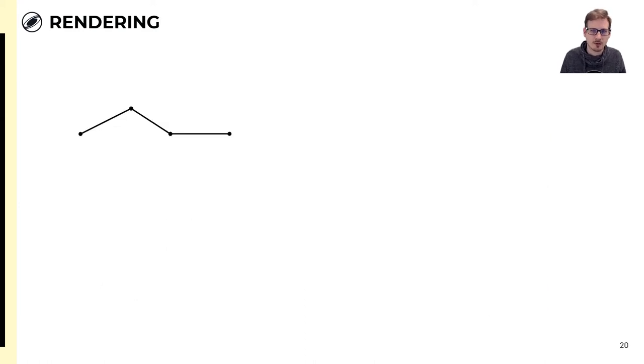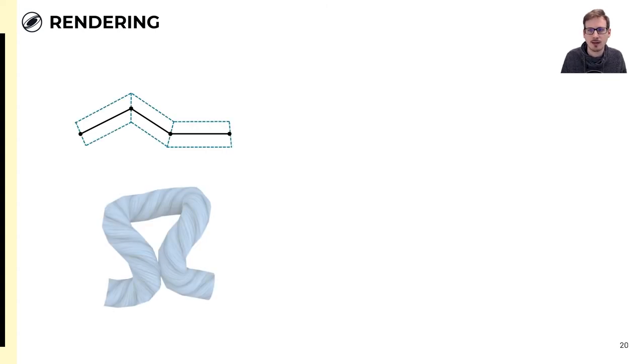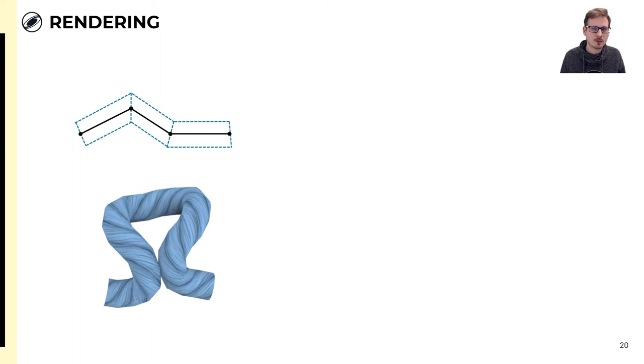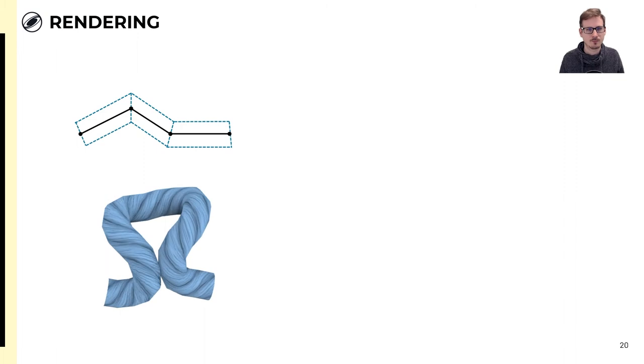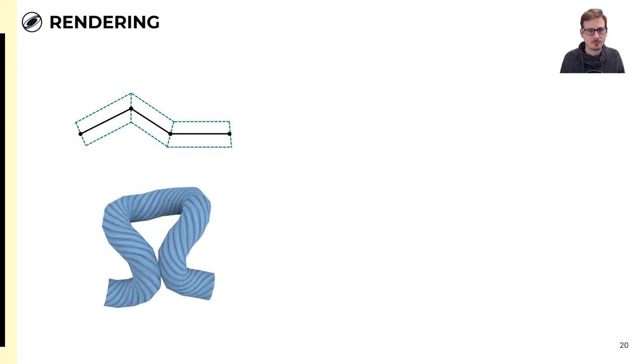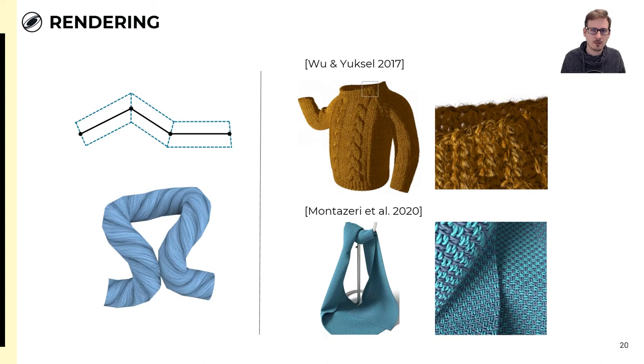Finally, a quick note on rendering. We render our yarns by tessellating the animated yarn centerlines to cylinders. You can find more information on how to map physical yarn twisting in our supplementary document. We also add a procedurally twistable normal map to represent smaller ply and fiber level detail. Alternatively, one might consider the real-time fiber rendering method of Wu and Yuxel or the method of Montessori et al. for accurate path tracing.